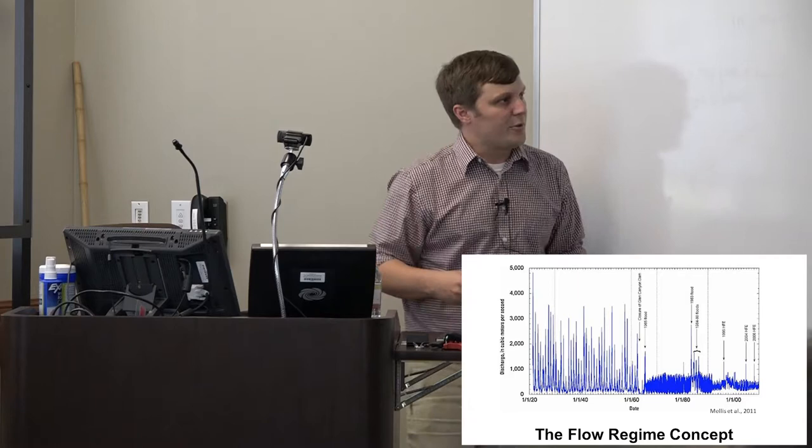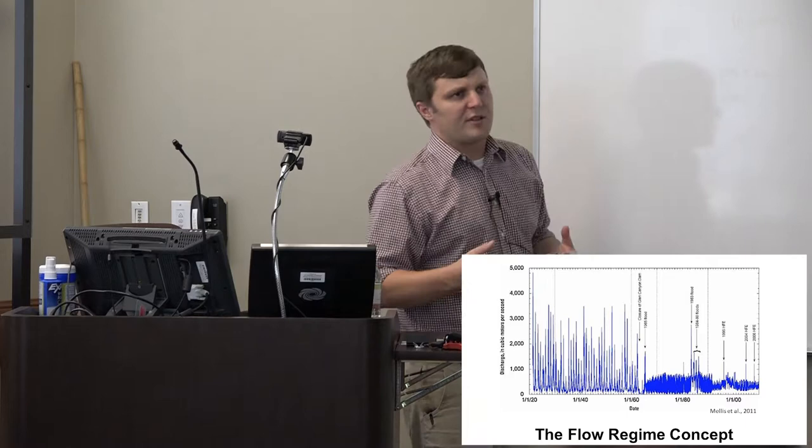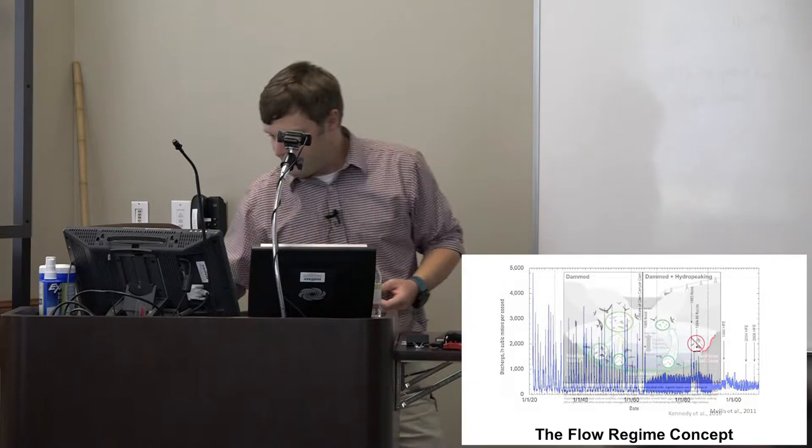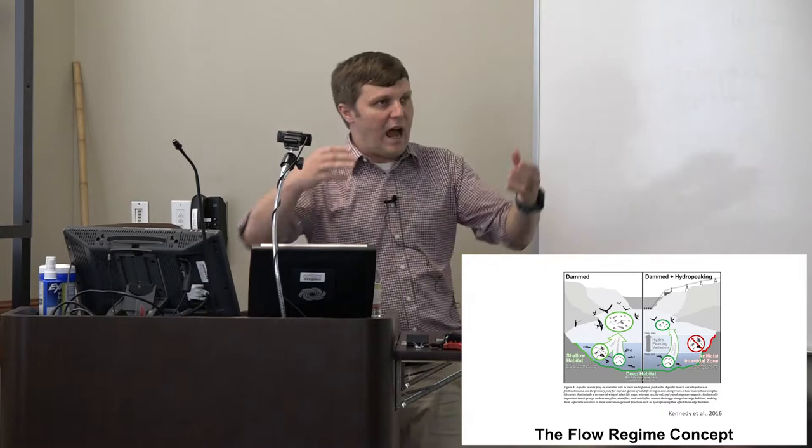I just googled natural flow regime, Glen Canyon Dam, and this was the first paper that popped up. But there's a ton of management strategies that can be used to manage that flow much better. And the great thing about a dam, from an ecosystem perspective, dams aren't always great, but the great thing is, it's a valve. We can control what's coming in and out of the reservoir to some degree at least.